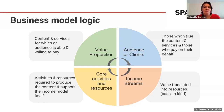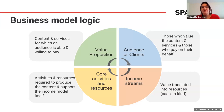The income streams support the core activities and resources required to produce and distribute the content and support the income model itself. How well this model flows defines how sustainable the business is. In recap: all businesses need a value proposition, an audience, income streams, and a set of activities and resources that allow them to create value. It's a cycle.